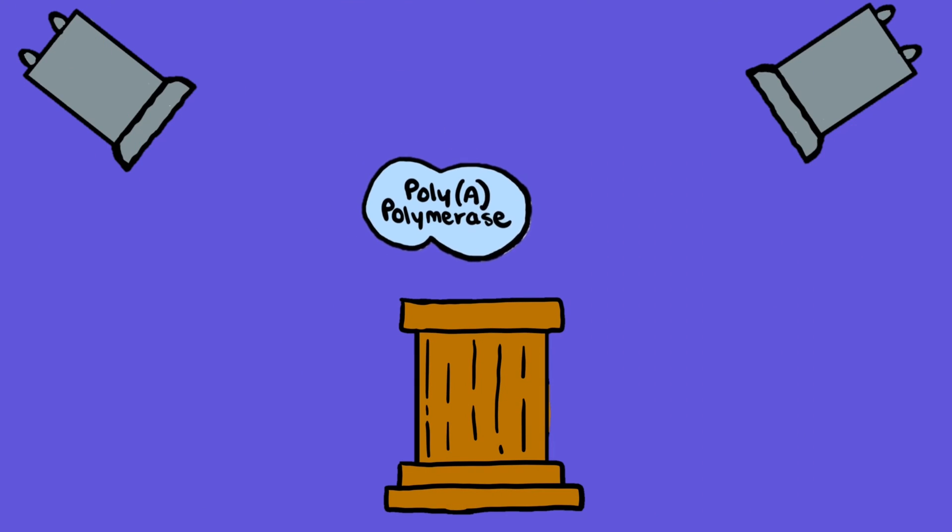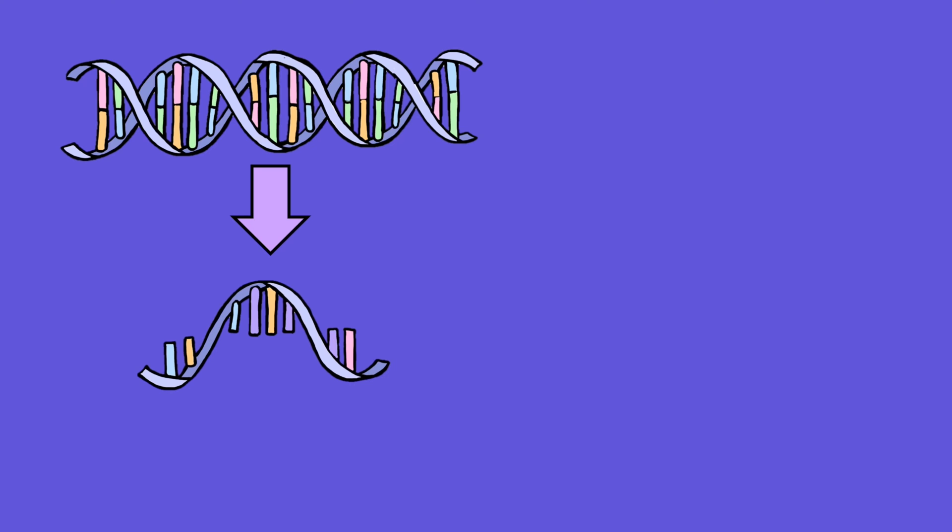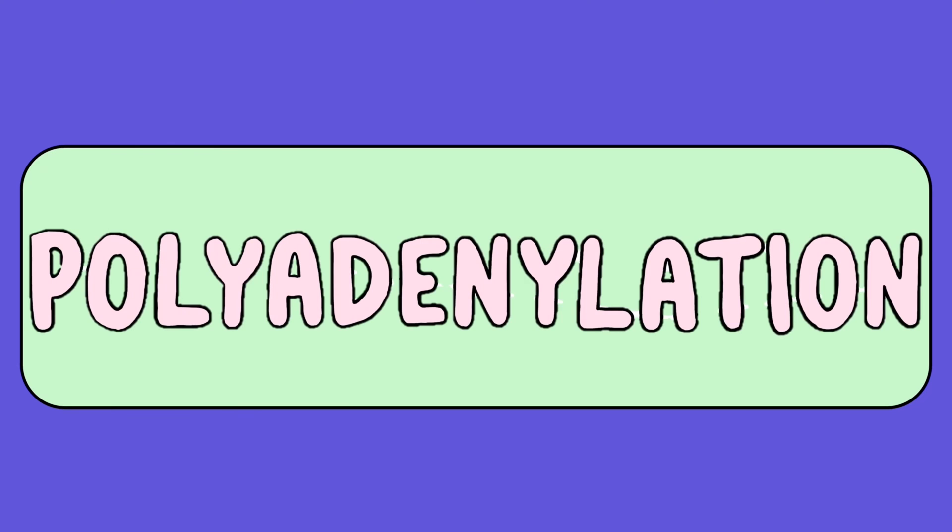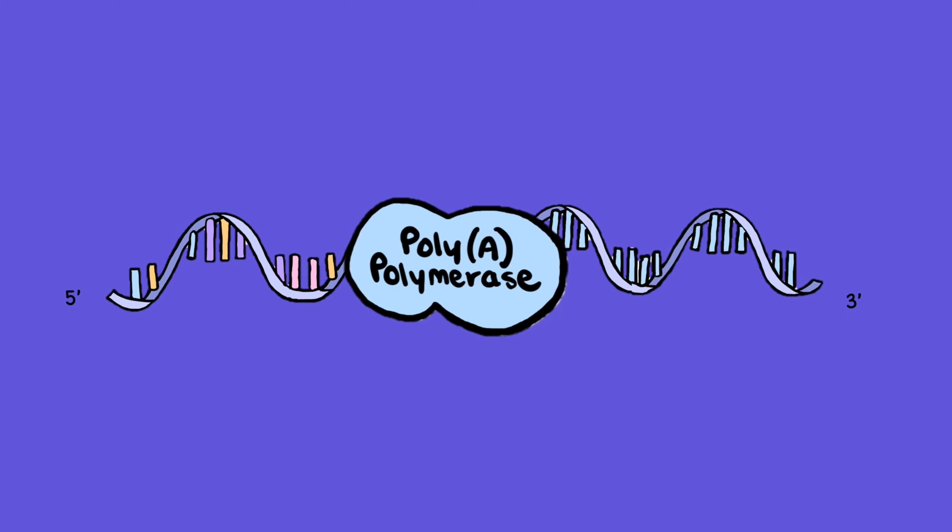In this intricate journey, polyadenylate polymerase or polyA polymerase is a key protagonist. After DNA becomes pre-mRNA, polyA polymerase steps in to facilitate the critical makeover of mRNA known as polyadenylation. This is where a string of adenosine monophosphate units are added to the three prime end of mRNA, forming a poly-A tail.